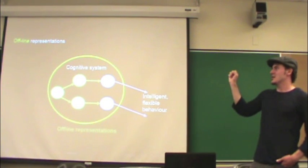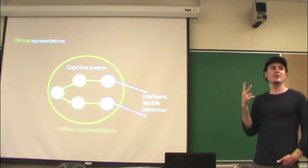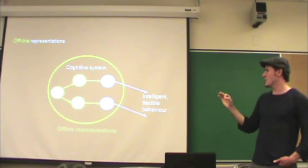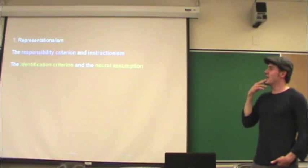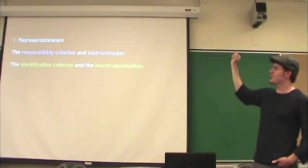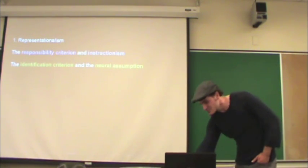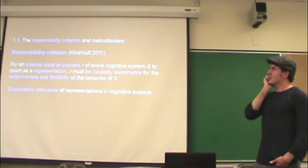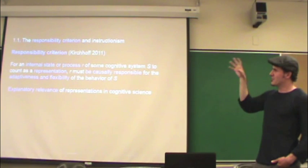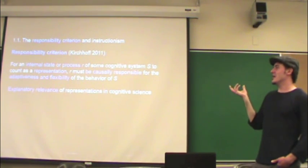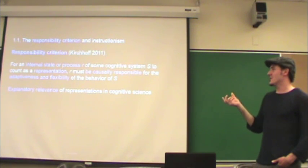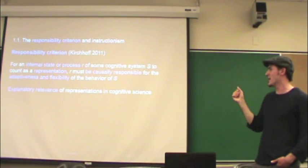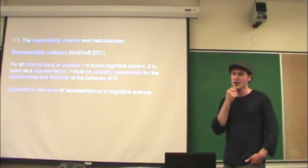What I'm not going to be talking about today is offline representations — the kind involved when I think about Paris, a long-lost friend, or a situation I'm not actively engaged in. We're going to focus on the online variety. Now I'm going to introduce two criteria that allow us to pinpoint and individuate what representations are: the responsibility criterion and the identification criterion, which relate to the notions of instructionism and the neural assumption in the readings for today. The responsibility criterion — based on Kirchhoff's 2011 article — states that for an internal state or process to count as a representation, that state or process must be causally responsible for the adaptiveness and flexibility of the system's behavior.